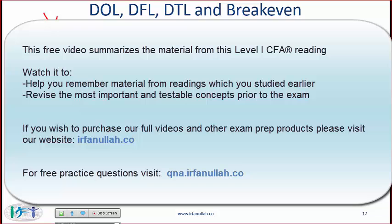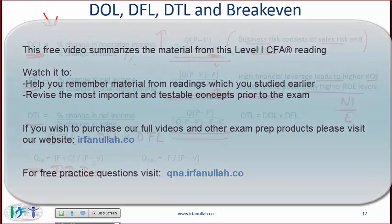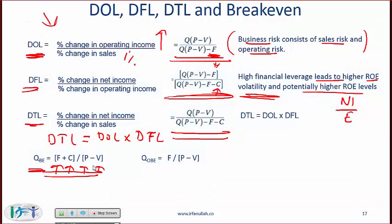The next point in this reading has to do with breakeven. The breakeven quantity is given by this formula — it is the quantity at which net profit is zero. F stands for fixed costs, C is finance costs, P is the price at which you sell, and V is your variable cost per item. QOBE is the operating breakeven — the quantity where your operating profit is zero. Make sure you know all these formulas.